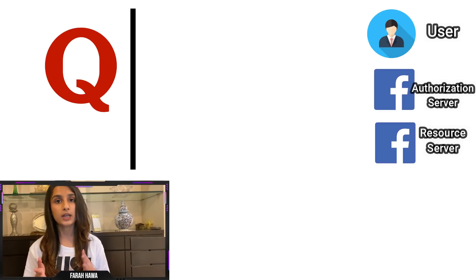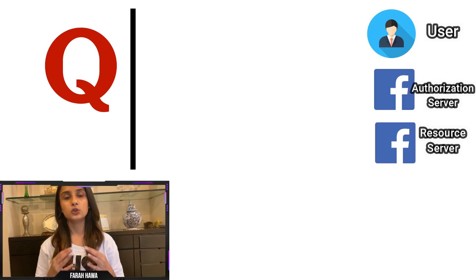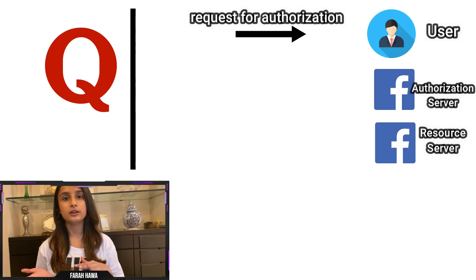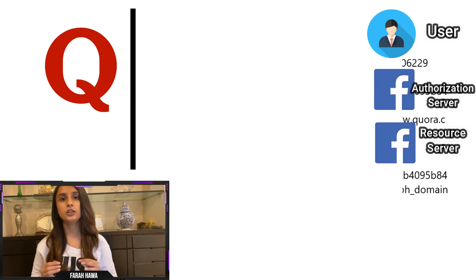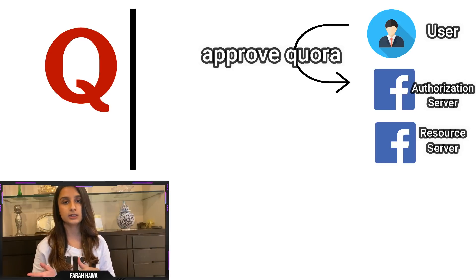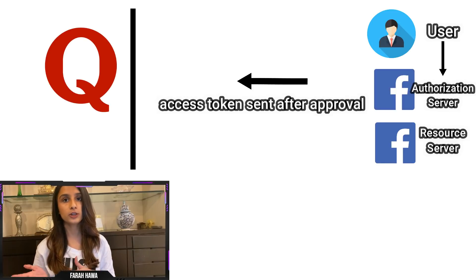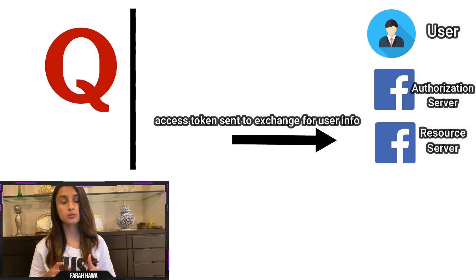Let's look at the implicit grant flow now. In this case, instead of receiving an authorization code and then exchanging it for an access token, the application directly receives an access token. For better understanding we'll use Quora as the client and assume the user logs in through Facebook. When the user clicks on the login with Facebook button, he's redirected to Facebook's authorization server. The only key difference is that the response type is 'token' instead of 'code'. Once Facebook receives the user's approval, it will send an access token directly to Quora, which Quora uses to retrieve the user's account details from Facebook's resource server.